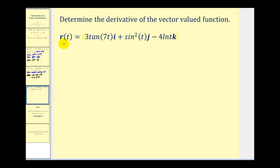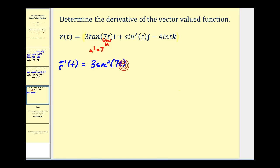Let's find the derivative of this vector-valued function. First, we need the derivative of 3 tangent 7t. This requires the chain rule where u equals 7t, so u prime equals 7. The derivative of 3 tangent u is 3 secant squared u — which is 7t — times u prime, giving us another factor of 7.